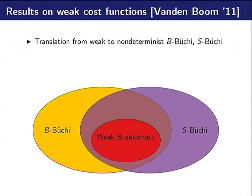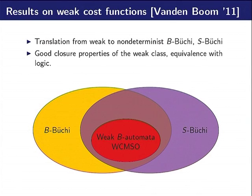In the same paper, there was a translation from weak automata to B-Büchi and S-Büchi. This shows that the class of weak definable cost functions is included in the intersection of these classes. Moreover, the class has a number of good properties such as closure by a number of operators and equivalence with an analog of weak MSO that we call weak cost MSO.